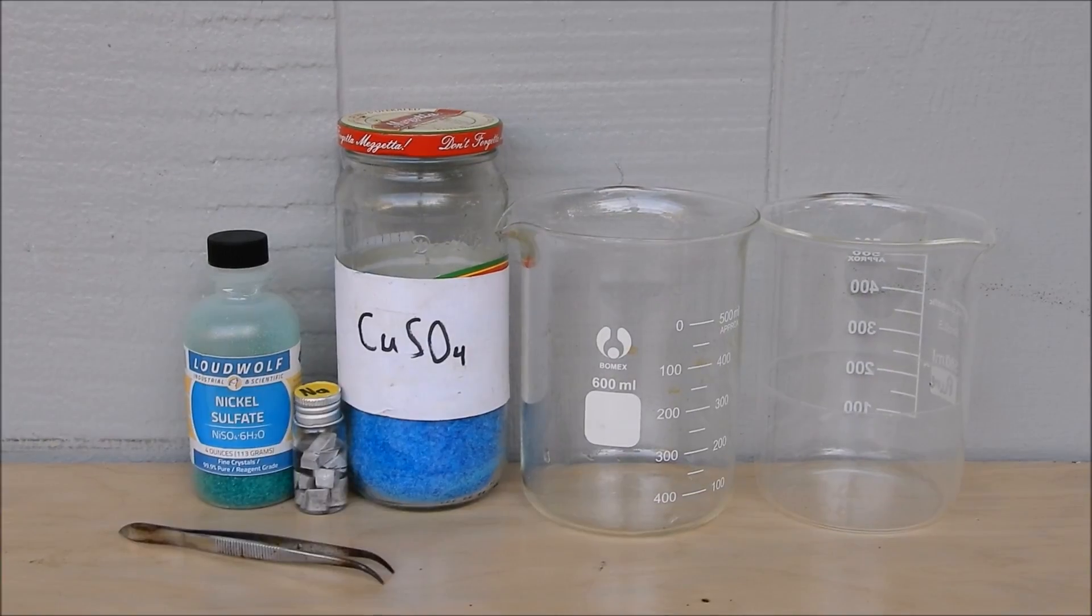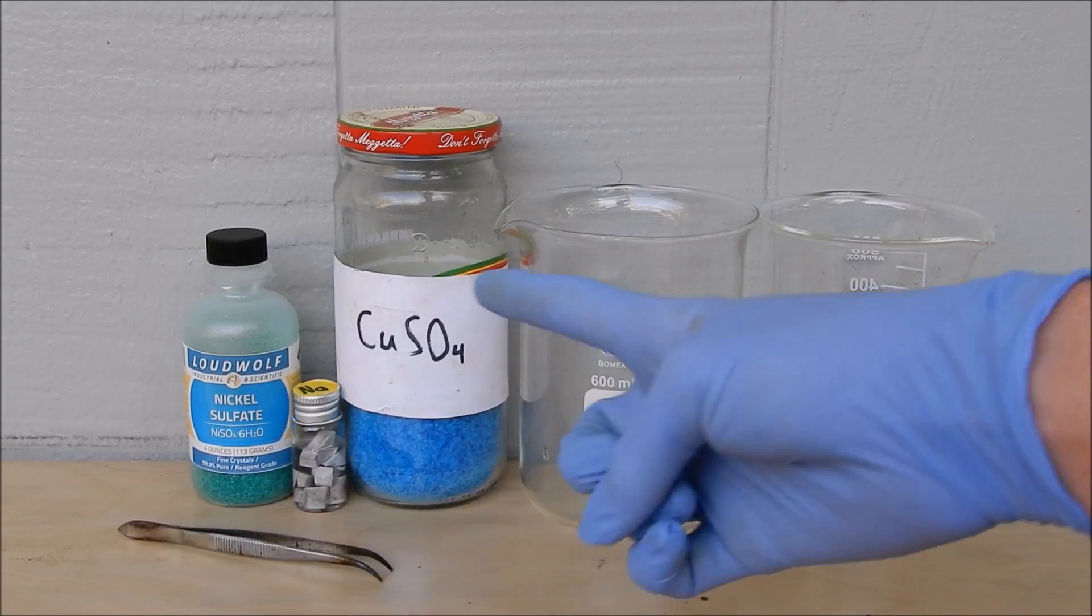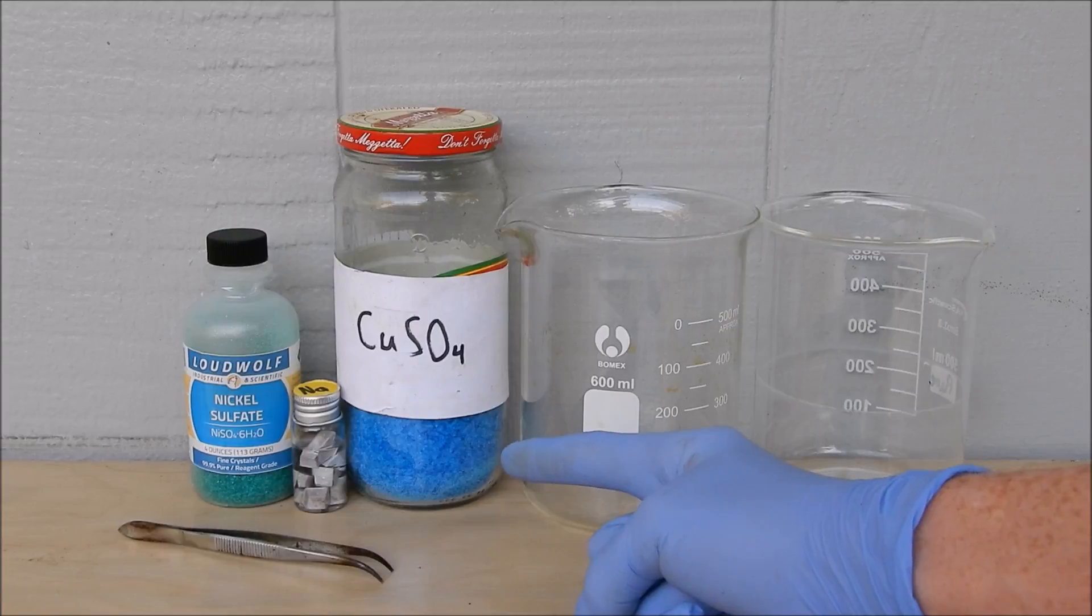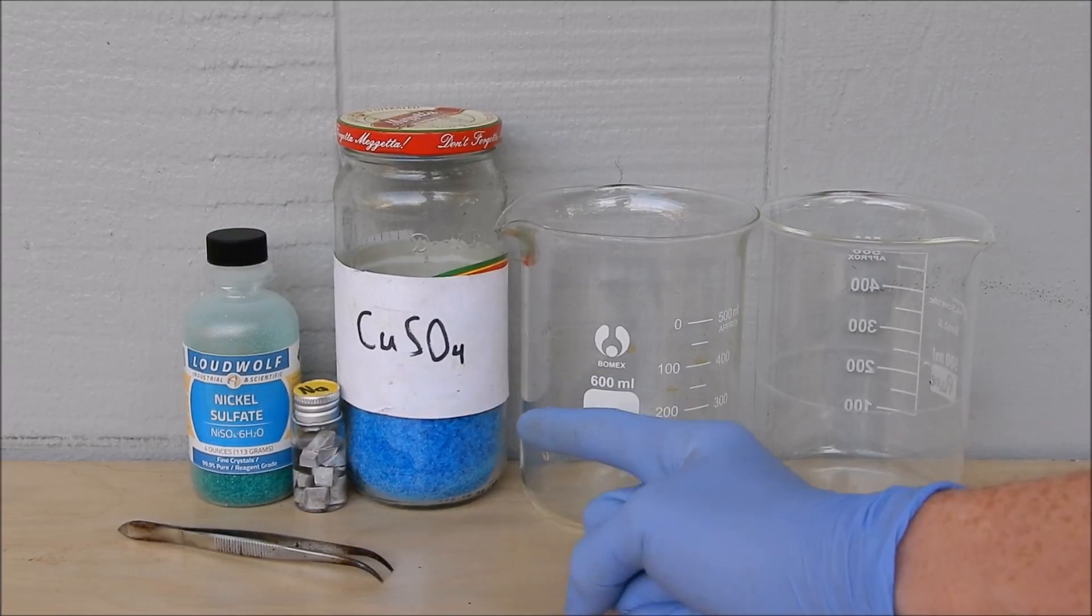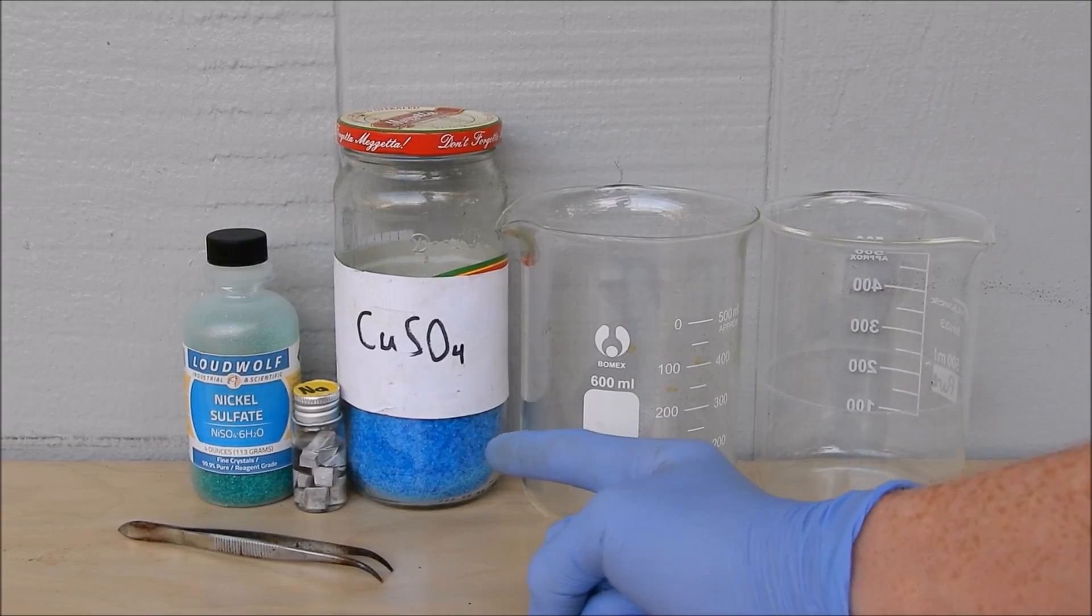Here's what we're going to need: two beakers, sodium metal, nickel sulfate, and I'm going to be using copper sulfate as a control to see if it even works with copper sulfate and sodium metal. So let's prepare our control solution: copper sulfate in water.